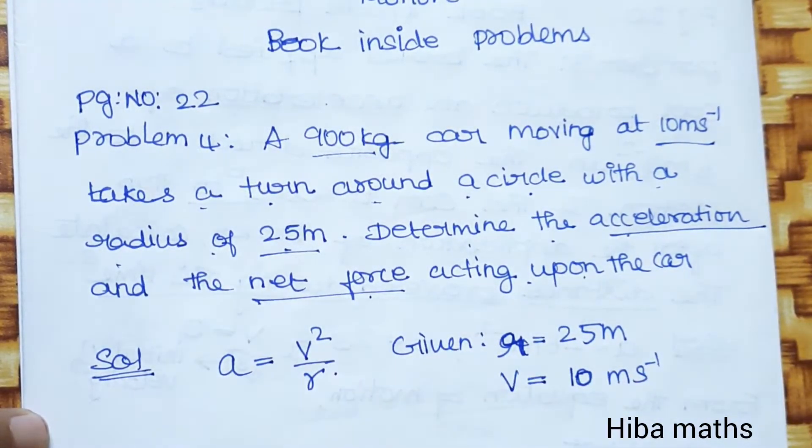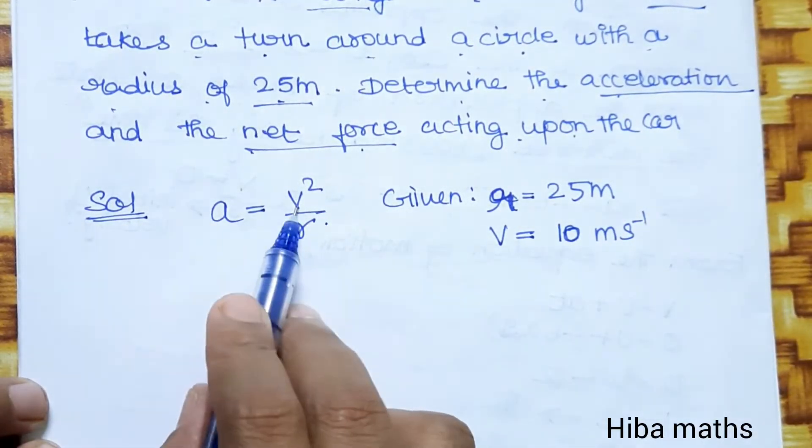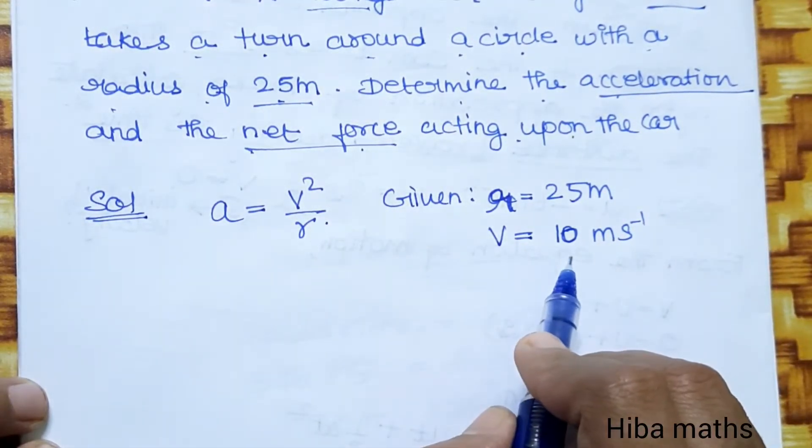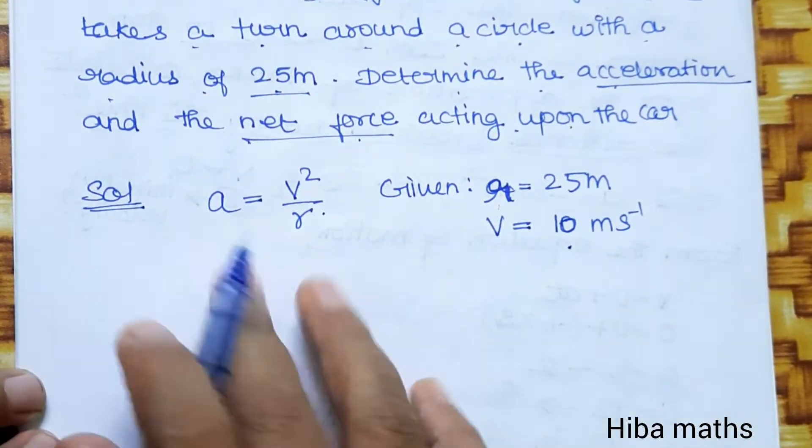Acceleration is what we need to find, along with net force. Acceleration is equal to v² by r. Velocity value is 10, radius value is 25 meters. Now we calculate acceleration.